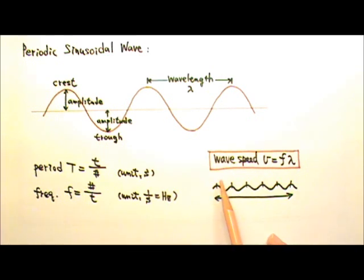The speed of a periodic wave can be found using this equation. The wave speed v equals the frequency times the wavelength. This means that the distance traveled per second equals the number of waves per second times the length of each wave.